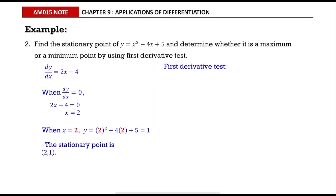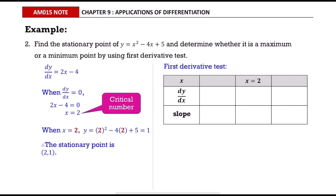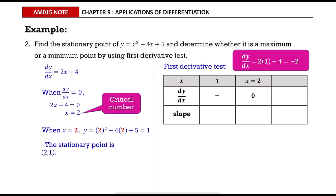Now use the first derivative test to determine whether it is a maximum or minimum point. Since there is only one point, we create a three-row, four-column table. The first column is always filled with x, dy/dx, and slope, where x is the test value and dy/dx represents the sign — plus or minus — when we substitute the test value. Fill the third column with the critical number where dy/dx equals zero. Then test on both sides of x = 2. On the left side we choose 1 to substitute into dy/dx and we get negative 2, but we only write the sign — negative — in the table.